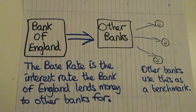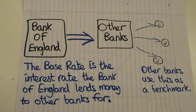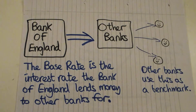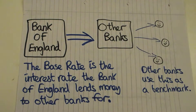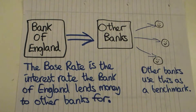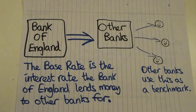The way this works in relation to the Bank of England is that it lends money to other banks like Santander and Nationwide. The base rate is the interest rate the Bank of England charges these other banks to borrow money. Those other banks then use this as a benchmark for what they charge us when we want to borrow from them, so the Bank of England is effectively in control of interest rates through this mechanism.